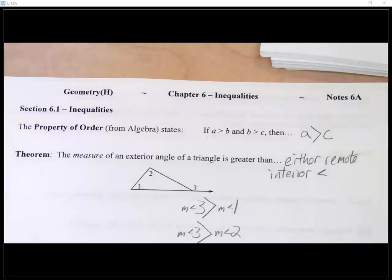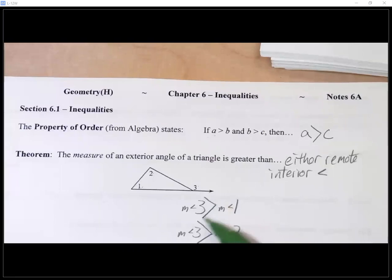So in this diagram, we would know for a fact that the measure of angle three, whatever it is, is going to be greater than the measure of angle one. And we would also know that the measure of angle three is going to be greater than the measure of angle two. I don't know how angles one and two compare to each other. I have no idea, but I know that three would be greater than either one of them individually.